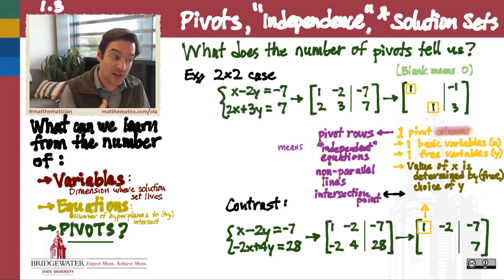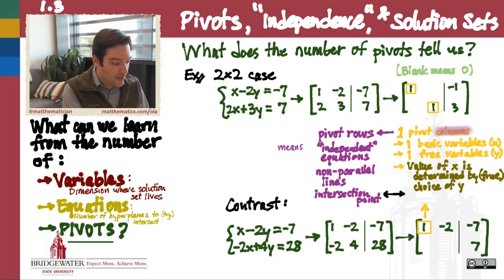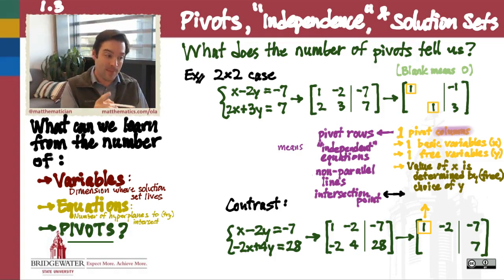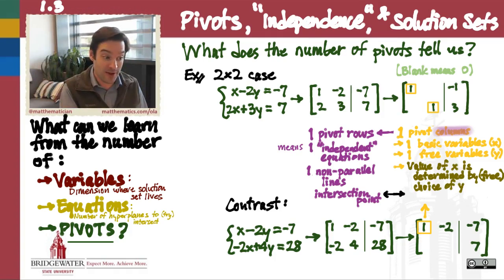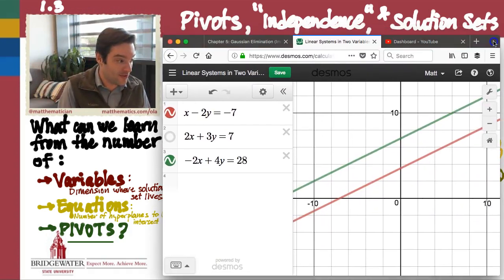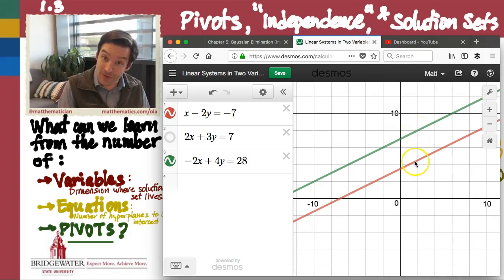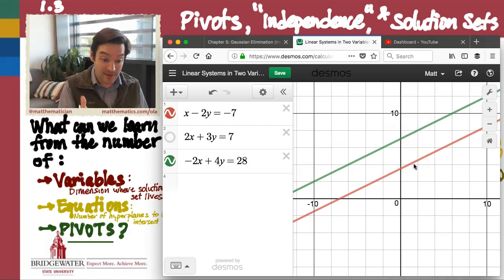But that information alone isn't enough to give us the whole story. For the whole story, we also need to look at what it tells us about the rows. We have one pivot column, but because every column can only have one pivot and every row can only have one pivot, that means we only have one pivot row as well. Only one of the equations in my linear system is telling a unique story, and the story the other row tells is somehow related — it's not independent of the story the other one is telling. The reason for that in this system is that the second line is parallel to the first line.